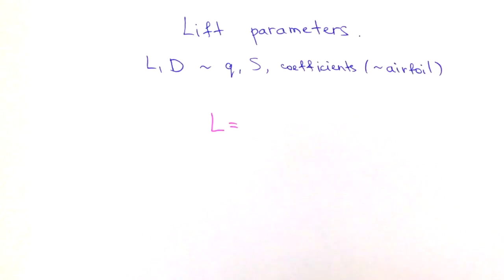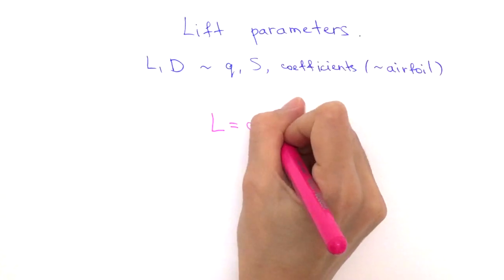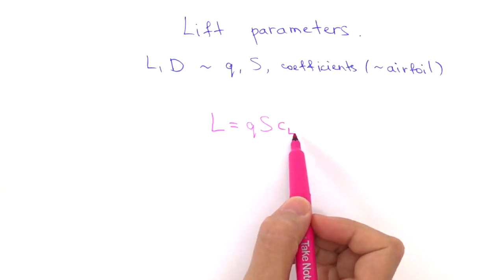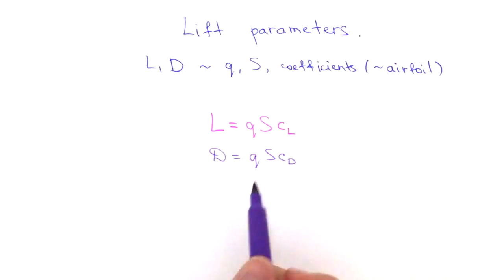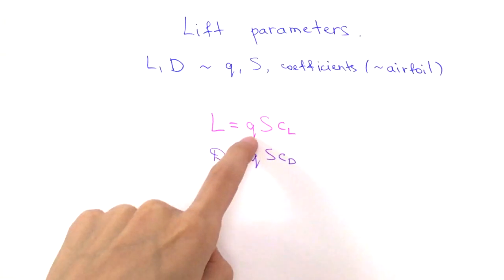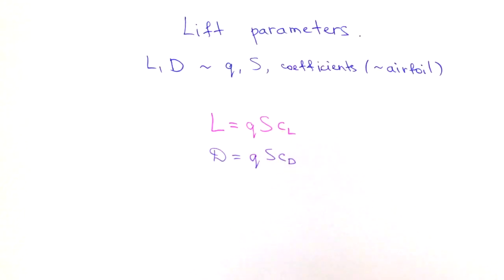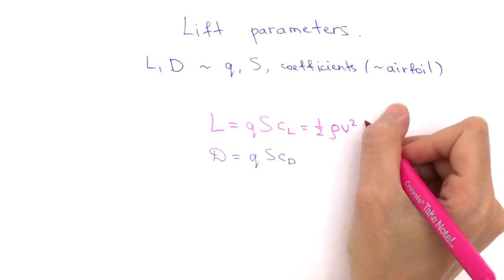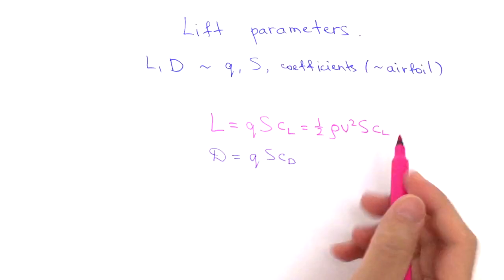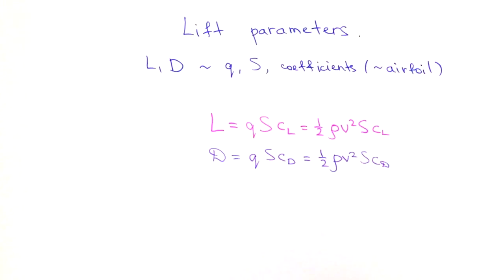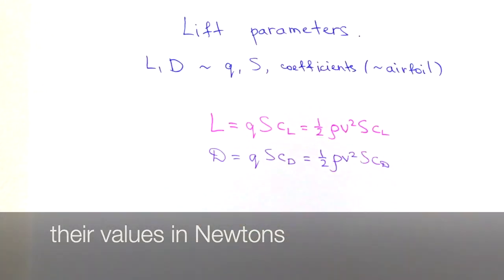To find lift, we multiply dynamic pressure by the area of the wing and by the lift coefficient, denoted C subscript L. The same is true for drag, but using the drag coefficient instead. Expanding dynamic pressure, we get: Lift = one-half × density × velocity² × wing area × C_L, and similarly Drag = one-half × density × velocity² × wing area × C_D. We can use these formulas to find lift and drag values if we know all the parameters.